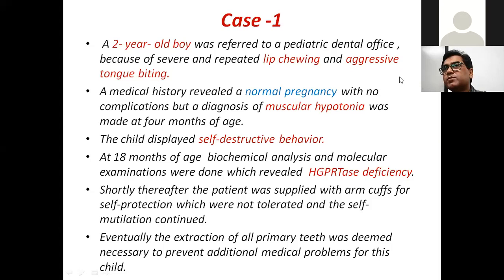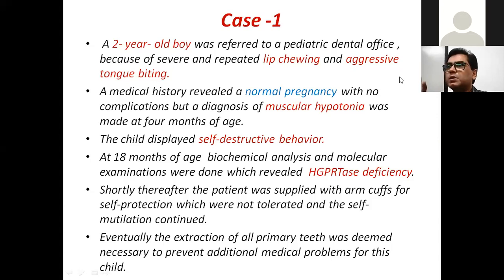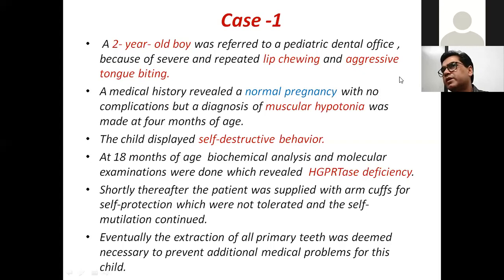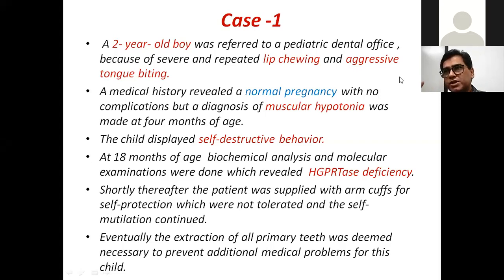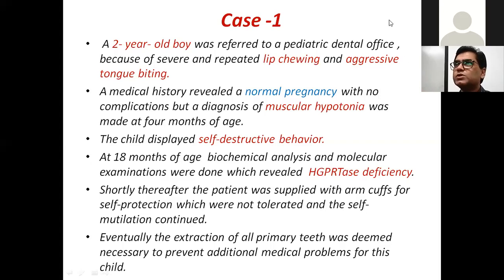Regarding enzyme levels — the HGPRT enzyme was deficient, meaning decreased. Basically, there were two hints: the HGPRT deficiency clearly points to Lesch-Nyhan Syndrome, but even without mentioning the enzyme deficiency, you should be able to diagnose the situation from the aggressive self-destructive and self-mutilation behavior, which is a characteristic feature of Lesch-Nyhan Syndrome.